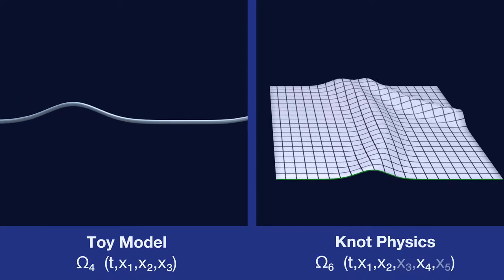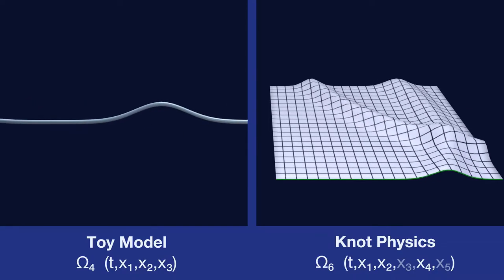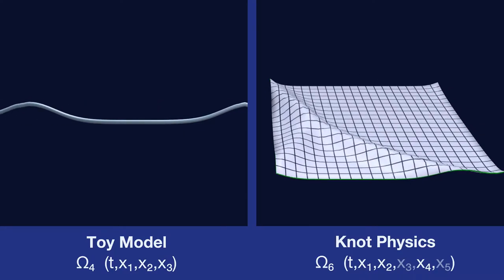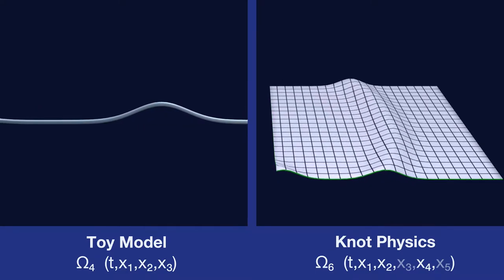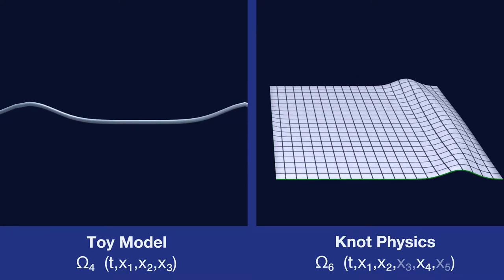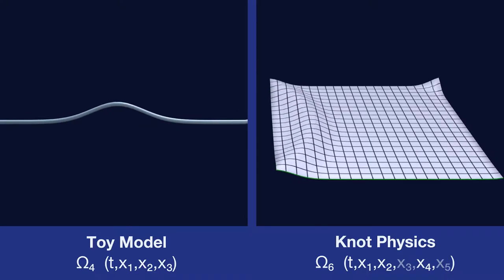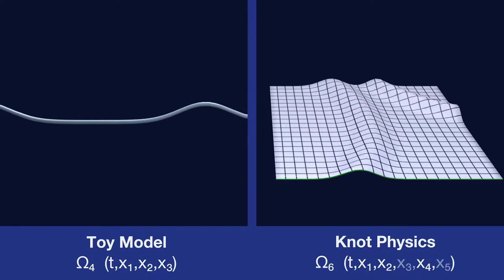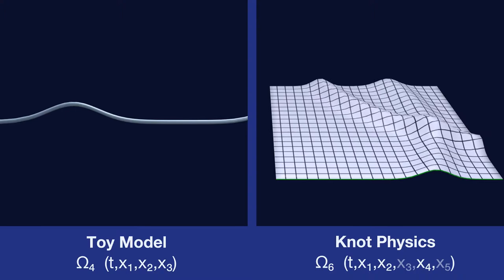It's an interesting side point to note that this is not true for the toy model. Because the toy model is a lower dimensional manifold, it's less constrained by the curvature constraints of this theory. But we're not particularly interested in the behavior of the toy model in this particular case.